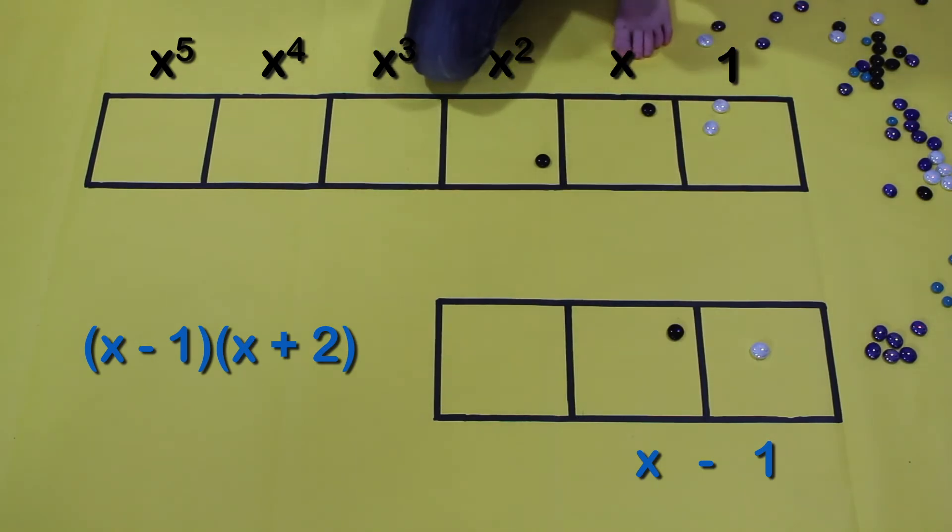Alright, so x minus 1 times x plus 2 equals x squared plus x minus 2.